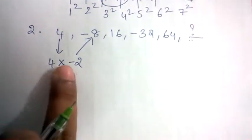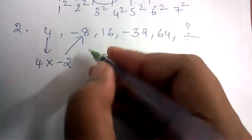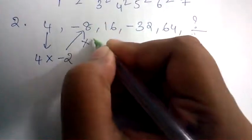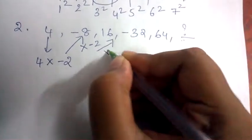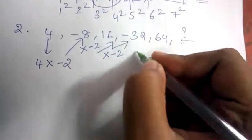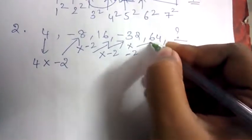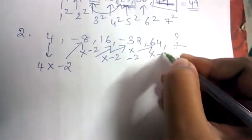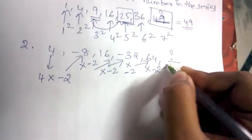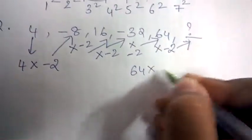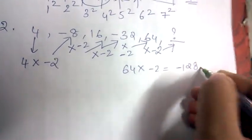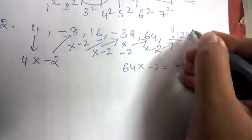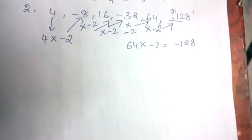Take 4 and multiply it by -2 to get -8. Then multiply -8 by -2 to get 16. Multiply 16 by -2 to get -32. Multiply -32 by -2 to get 64. Finally, multiply 64 by -2 to get -128. So -128 comes as the answer in the question mark position.